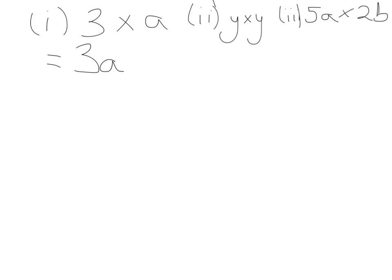In example two, we have a letter multiplied by a letter — in this case, the same letter. So we go back to our rules of indices. When you multiply two letters with the same base, you add their indices — what's on their shoulder. Y has an invisible one on its shoulder, and so does the other Y, so Y times Y gives us Y squared.